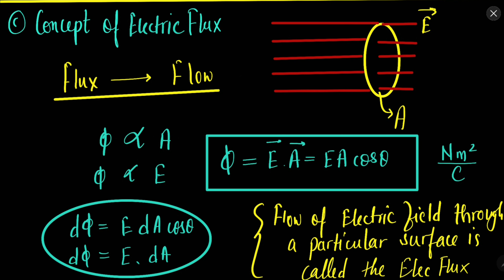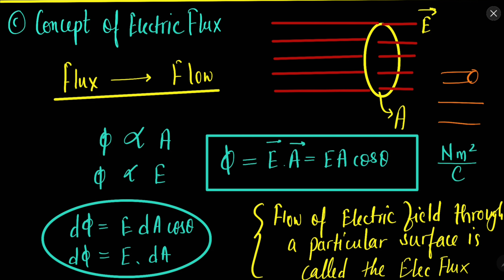Now we can understand the concept of flux. According to the concept of flux, it can be understood by the analogy of flow — flux is like a flow. Electric flux tells us about the flow of electric field from a certain region. Flux is represented by phi and it is proportional to area, because more the area, more will be the lines that flow out. This can be understood using the pipe-and-water analogy: thicker the pipe, more water can flow. So if the area of the conductor is more, more electric field will be going out, and flux also depends on the electric field.